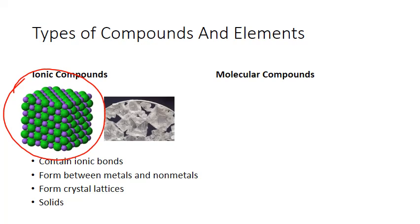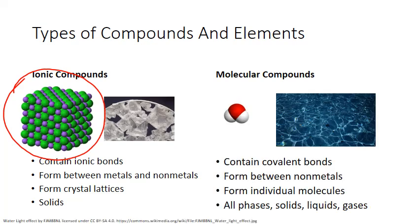In contrast, the covalent bonds found in molecular compounds form just between two atoms at a time. A molecule can actually contain multiple covalent bonds, so you can have more than just two atoms within a molecule, but each bond within a molecule is found between two distinct atoms. As a result, molecules are distinct discrete particles — they contain only the atoms that are chemically covalently bonded together.